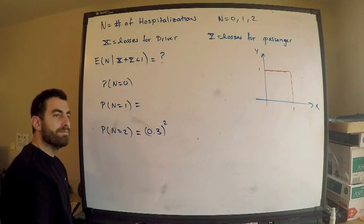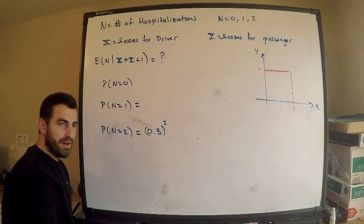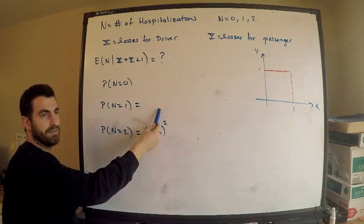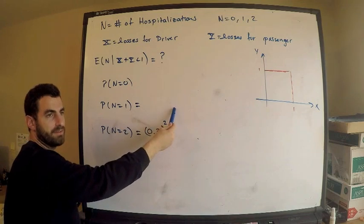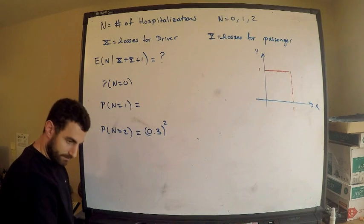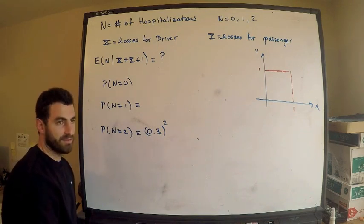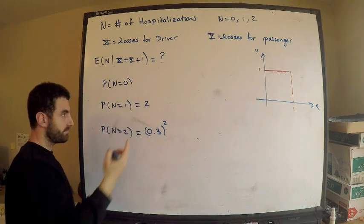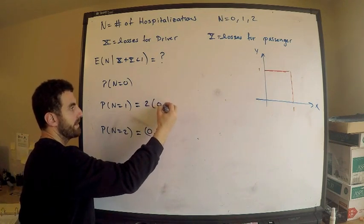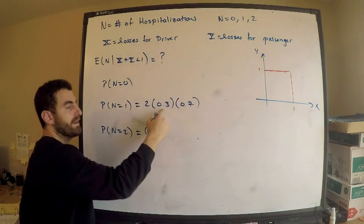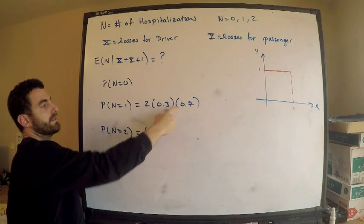What's the probability that one individual gets hospitalized? Either the driver gets hospitalized and the passenger doesn't, or the passenger does and the driver doesn't. Another way to think about this is two choose one — out of the two people, one person gets hospitalized. Either way you look at it, it's going to be two choices, and then one person gets hospitalized, the other one doesn't.